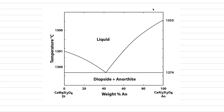Let's do a melting sequence example. The composition is AN30 DI70. That composition AN30 is right here, which is on the left-hand side of the eutectic. So what we're going to melt primarily is going to be diopside, because we're on this compositional side of this tipping point.